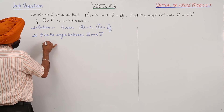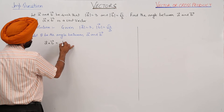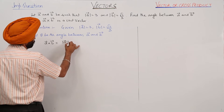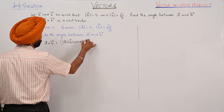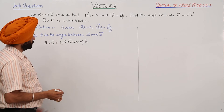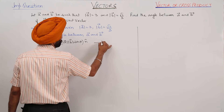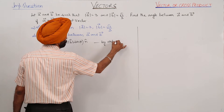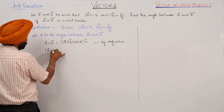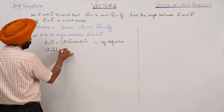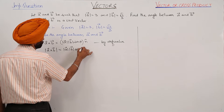Now, A cross B — the cross product A cross B is equal to the magnitude of A times the magnitude of B times sin theta, with unit vector N, where unit vector N is perpendicular to both vector A and vector B. So by definition, the modulus of the cross product of the two vectors is magnitude of vector A times magnitude of vector B times sin theta.